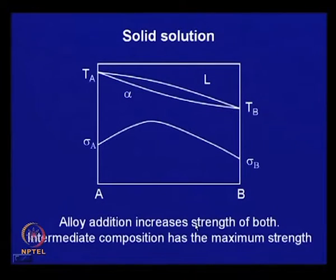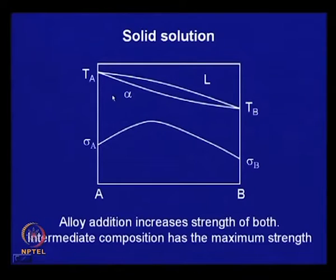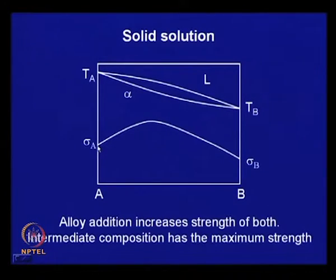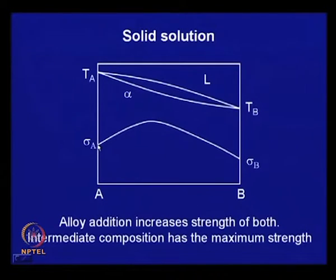Normally, if you look at a solid solution, the typical phase diagram has a liquid phase, a liquidus, a solidus, and here you have solid solution with no precipitation — this is a pure isomorphous system. If you look at the properties, you will find that at some intermediate alloy composition, we have maximum strength. Any alloy addition of element B to A increases the strength of A, and similarly, adding A to pure B increases the strength of B.